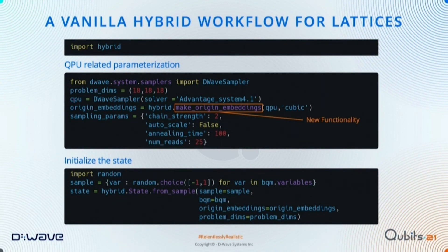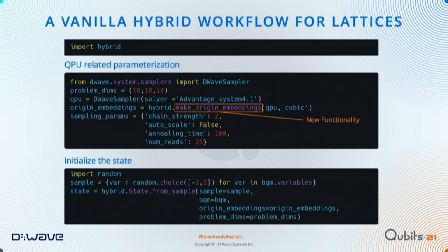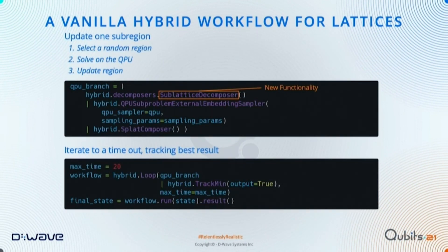I'll show the code in Python, which I hope will be easy enough to follow even for non-Python coders. First, we set up our sub-solver, which is the QPU. We specify the lattice dimensions and the solver — in this case the online Advantage processor with the latest update, which uses an extended h range from minus four to four, quite beneficial to this application. We turn auto-scale off to make use of the extended J range, set chain strength to two, and adjust annealing time and number of reads. We then initialize our state, define our workflow — selecting a sub-region with the new decomposer, submitting to the QPU with the fixed embedding, and substituting the solution back into the current estimate.